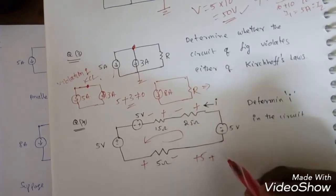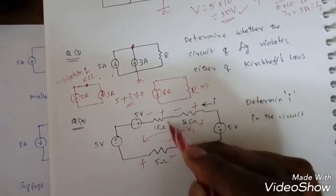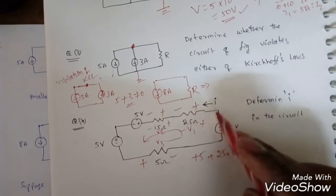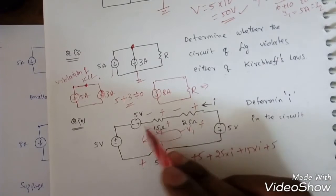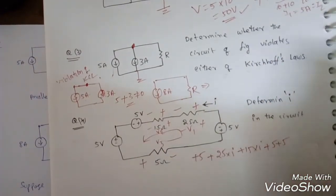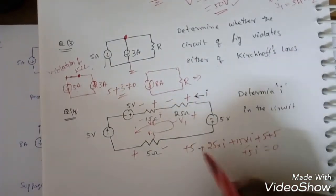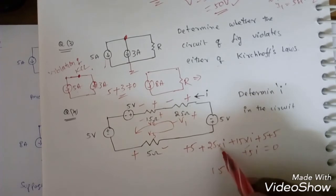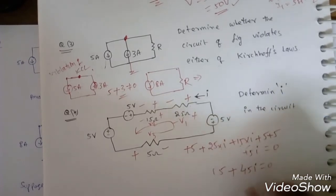Applying KVL as well as Ohm's law, I am writing directly: 25I + 15I. Plus 5 volts because plus 5 is touching again, plus 5 is touching, plus 5 into I equals 0. Now plus 5 plus 3 — that is 5 plus 5 plus 5 = 15 — so 25I + 15I + 5I = 45I, and summing the voltage sources gives 15. So 45I + 15 = 0.